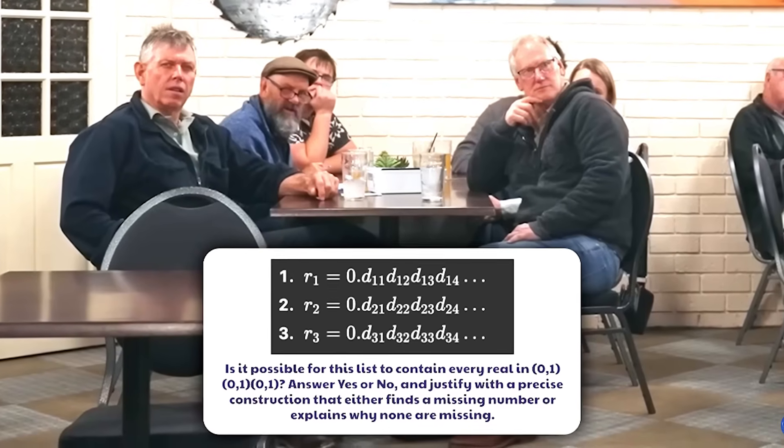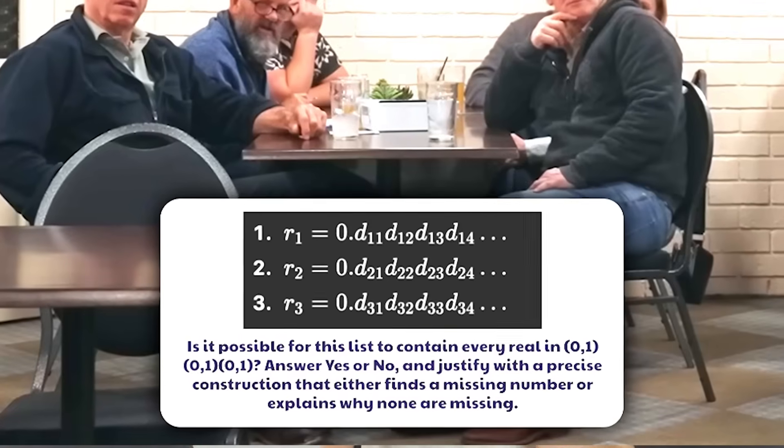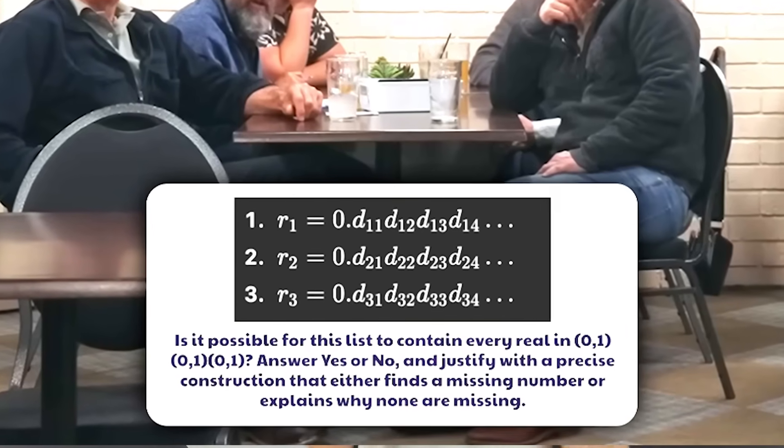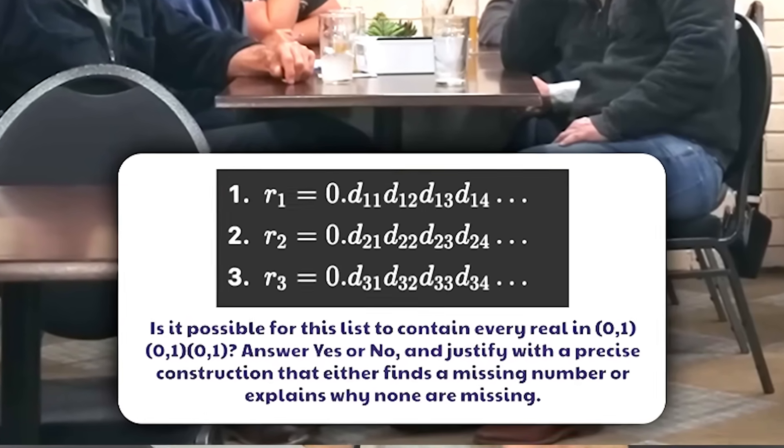Is it possible for this list to contain every real in the interval from zero to one? This is just all the numbers between zero and one. Answer yes or no and justify with a precise construction that either finds a missing number or explains why none are missing.